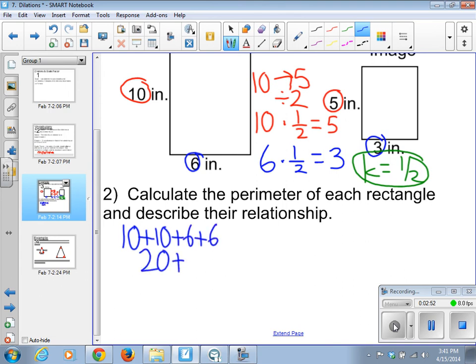Okay, break it down more. 20 plus 12. A perimeter of 32 for the original. And now for our image, it's a 5 by 3. So add up all the sides. 5 plus 5 plus 3 plus 3 gives us a perimeter here of 16.